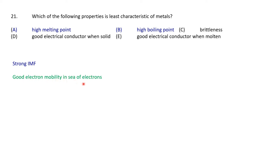Thus, you've got charged mobility, which makes them both good conductors, solid and when molten. OK, so both of those are true. So therefore, we're now left with brittleness.